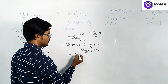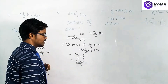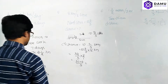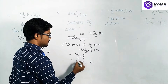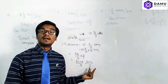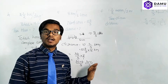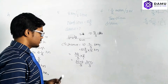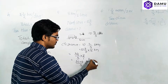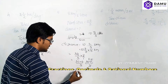10⅔ as an improper fraction: 3×10 = 30, plus 2 = 32, so it becomes 32/3. Then 32/3 × 8/1 = 256/3. To simplify: 3 goes into 256 — 3×85 = 255, remainder 1 — so the answer is 85 and 1/3.